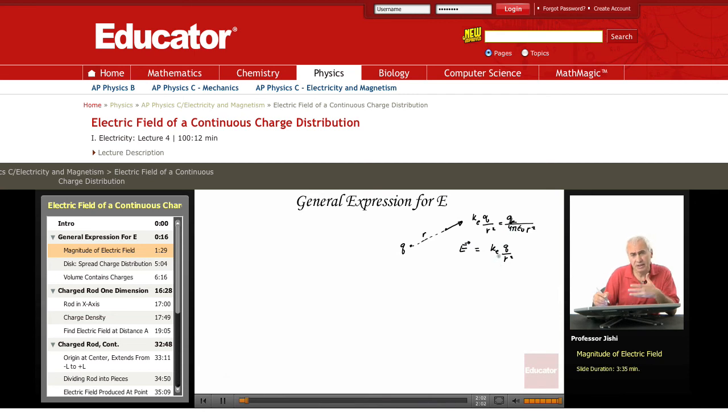This is the magnitude of E, and then, of course, this is a vector, so I must indicate the direction of E. E is along the radius, so I put R hat.